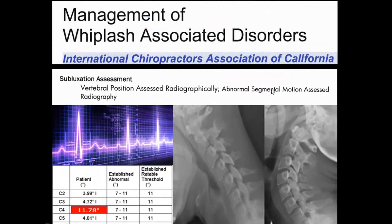The ICA also notes that abnormal segmental motion can be assessed radiographically, and this is probably the most accurate, reliable, and repeatable way to perform a subluxation assessment. You perform an intersegmental motion study by taking flexion-extension x-rays and loading them into a computer system that allows the radiologist to make measurements of the intersegmental motion patterns. Those patterns then give a readout — much like an EKG — that is very objective and has been shown to be the most accurate and reliable way to determine spinal misalignment.